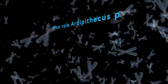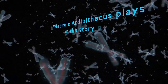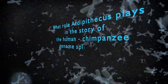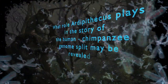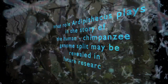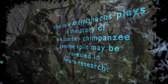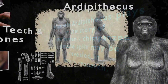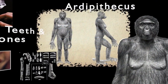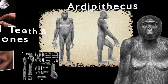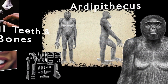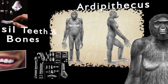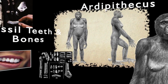What role Ardipithecus plays in the story of the human-chimpanzee genome split may be revealed in future research. The fossils of Ardipithecus kadabba consist largely of teeth, fragments of the lower jaw, pieces of the forearm, finger bones, a collar bone, and a toe bone.